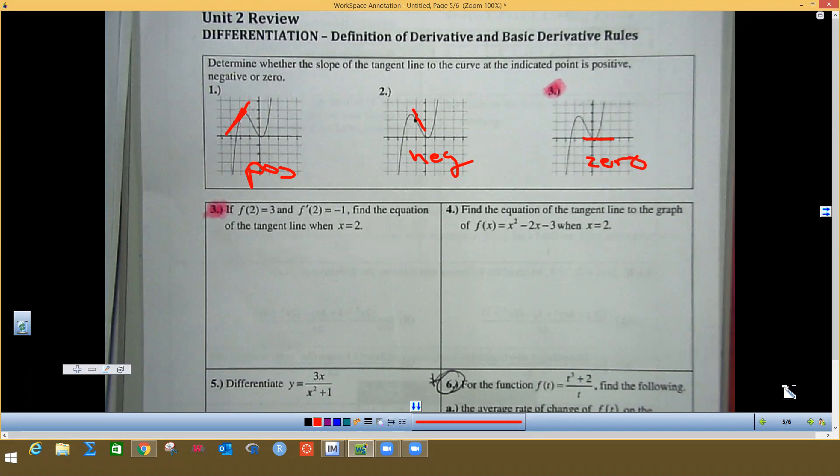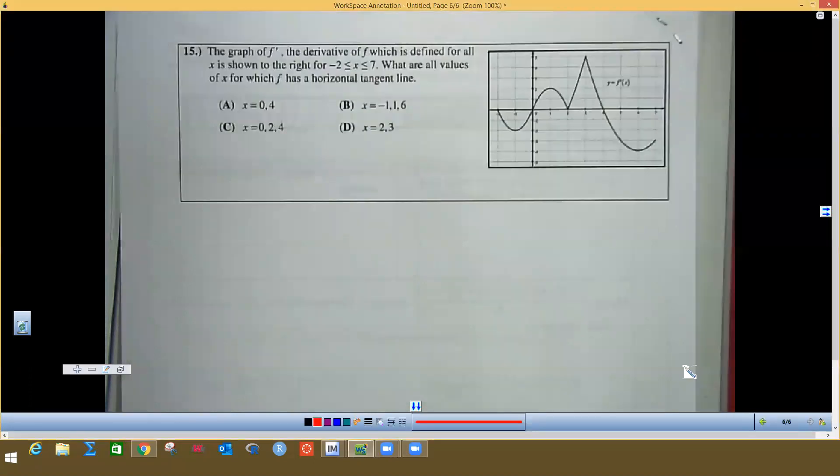I did three before, and then 15 is the last one that I haven't done yet. It says the graph of f prime, the derivative of f, so this is f prime, this is the derivative, which is defined for all x shown on the right from negative two to seven. And what are all values of x for which f has a horizontal tangent line? And again,